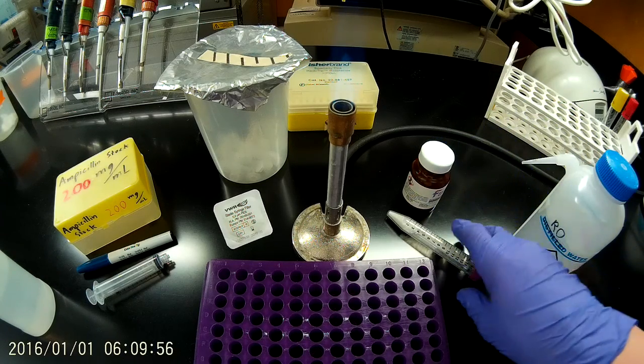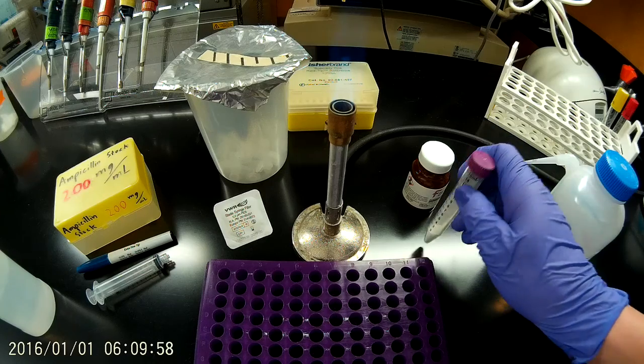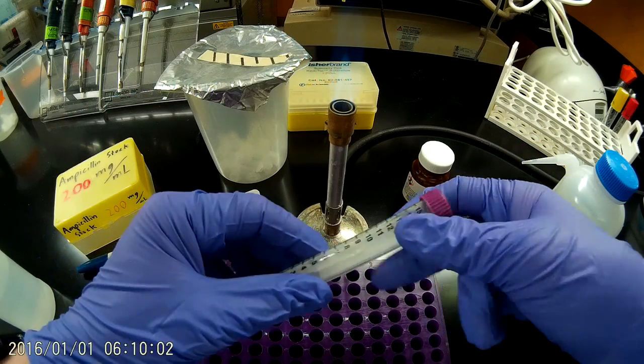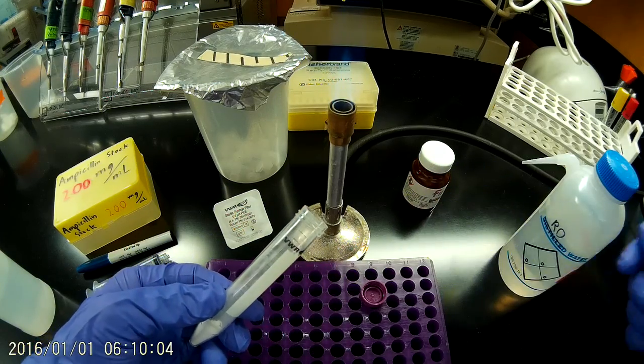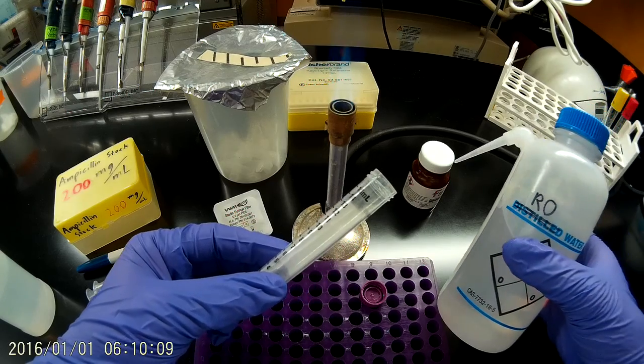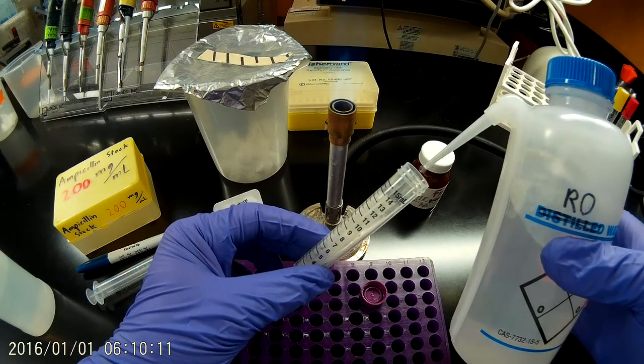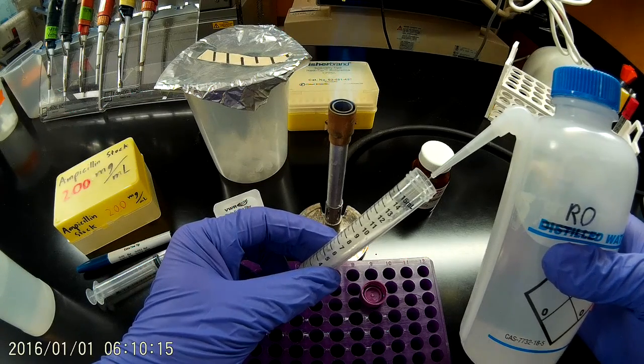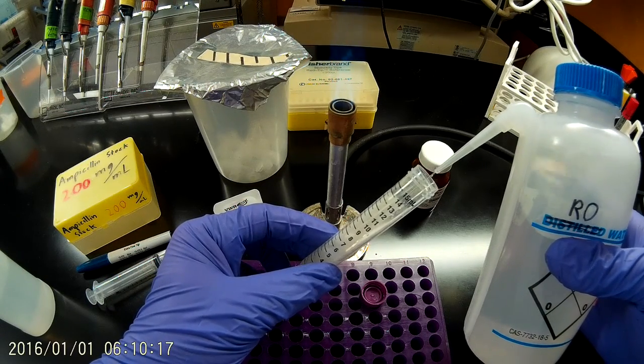So I took that out, I weighed out 2 grams of ampicillin powder, and now I'm going to add water to that. We're not working sterile yet, even though I have the flame going. I'm going to add millipore water to this, about to a volume of roughly 9 mils.